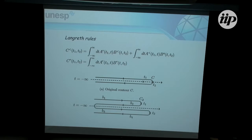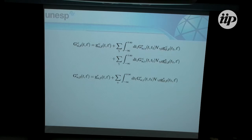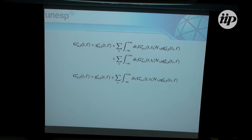Using these Langreth rules, I can go from the time representation to the spectral representation by doing a Fourier transform. So I can write the lesser Green's function and the retarded Green's function — the latter being basically the Dyson equation — and this is the equivalent of the Dyson equation for the lesser Green's function. Now if I look at the coupling, this Green's function times the coupling that I need to calculate can actually be rewritten not in terms of the Green's function between the central region and the electrodes, but in terms of the Green's function of the central region alone and the Green's function of the electrodes alone.